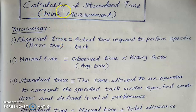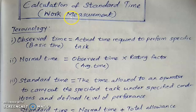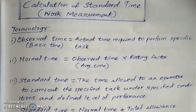Hello everyone. In this lecture series on industrial engineering, let us discuss the concept of work measurement. In the previous lecture we discussed various terms: observed time, normal time, and standard time. In this lecture let us have a few problems on the calculation of standard time. Let us first revise the terminology used.